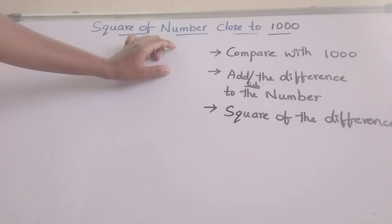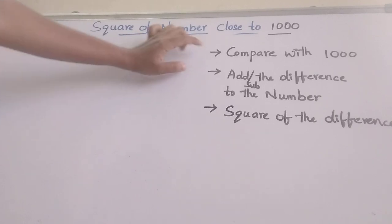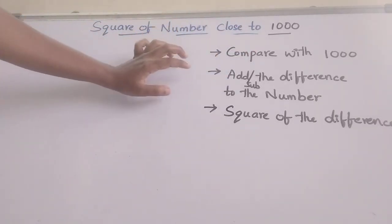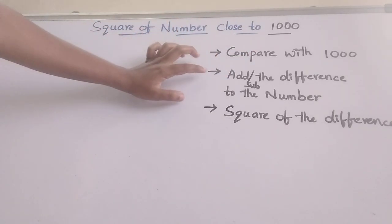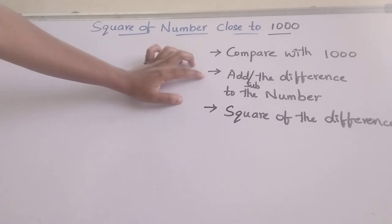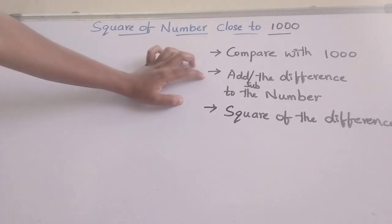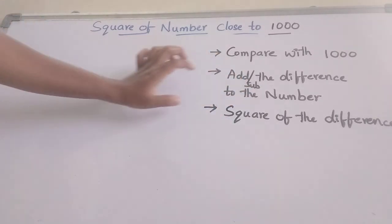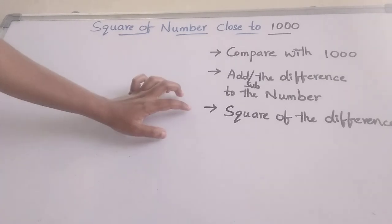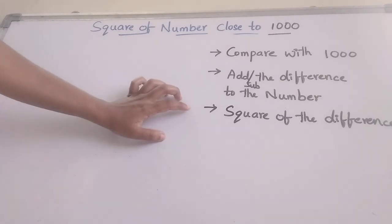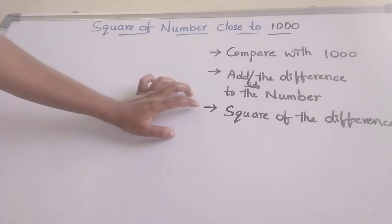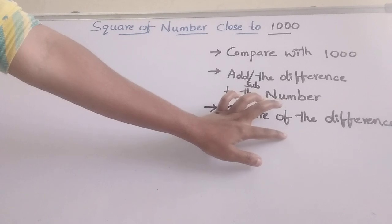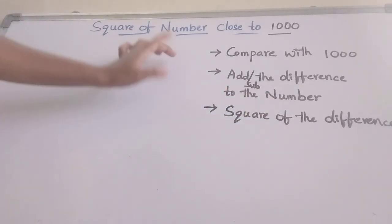First, the given number should be compared with 1000. After that we can see the difference, and that difference should be added or subtracted to that number. After that we take 3 blanks and write the square of that difference there.